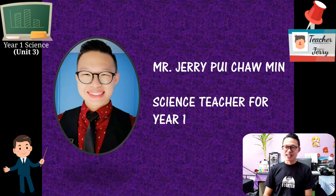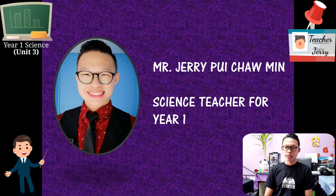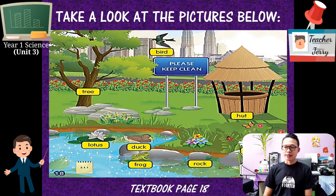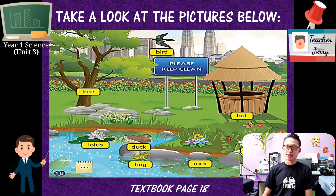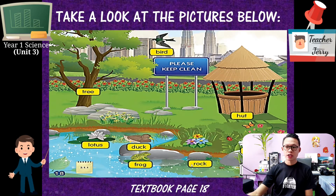Take a look at the picture on page 18 of your textbook. Inside here, we can see there is a bird, tree, lotus, duck, frog, rock, heart, and flowers.